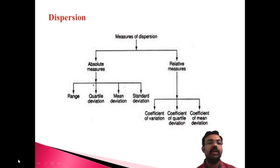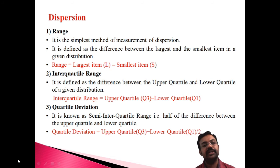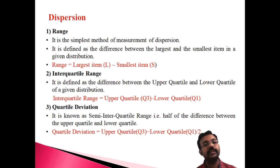Let us discuss one important measure of dispersion — the range. The range is the difference between the highest value and the lowest value in a distribution. That is, L minus S (largest item minus smallest item) is known as the range. It is one of the important measures of dispersion.